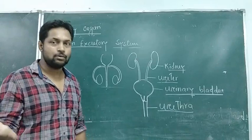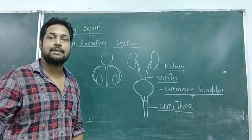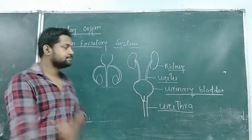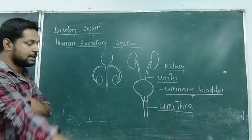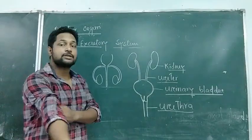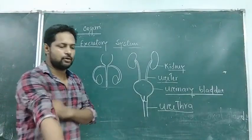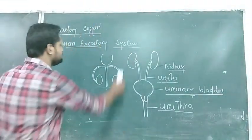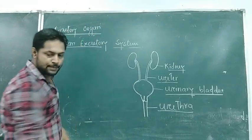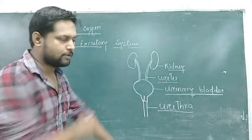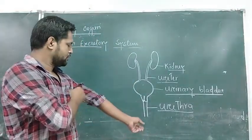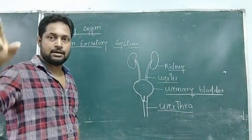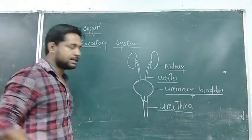This is called the urinogenital system. In the case of males, the urethra serves both the urinary and reproductive systems. But it is not the same for females.